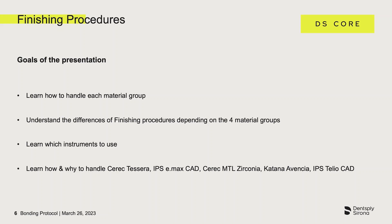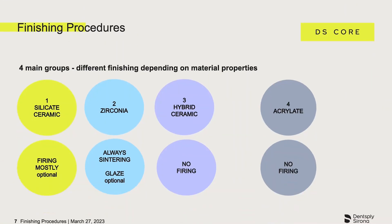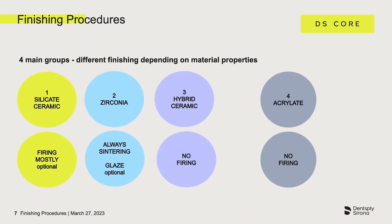The materials covered include CEREC TESSIRA, IPS EMAX CAD, CEREC MTL Zirconia, CATANA, AVENCIA, and IPS TELIO CAD. We will show you step by step why and how the materials are to be processed. Let's take a look at the four main groups of materials: the first group, silicate ceramics; the second, zirconia; the third group, hybrid ceramics; and the fourth group, acrylates.